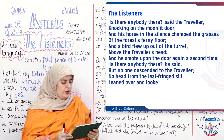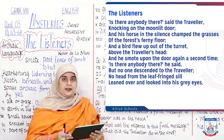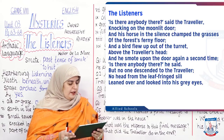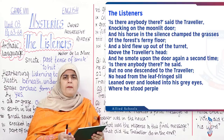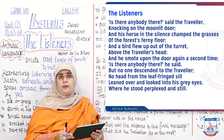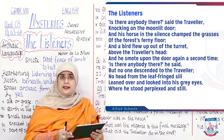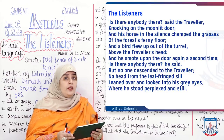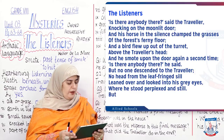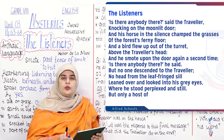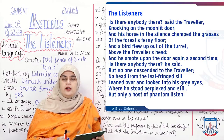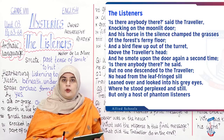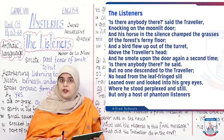He is knocking loudly, he is shouting, he is asking if anybody is there, but no one is coming down from the upper floor to open the main door. Neither is there anybody standing in the leaf-fringed sill — that is a balcony decorated with leaf fringes. He leant over and looked into his grey eyes — so now we know the traveller had grey eyes. He stood perplexed and still, waiting for somebody to answer, but there was no one over there. But only a host of phantom listeners — the ghosts were there, listening.